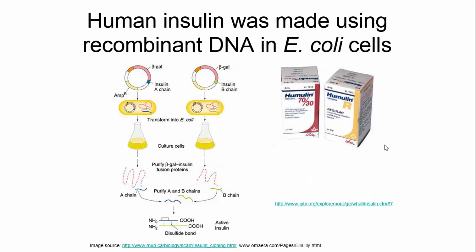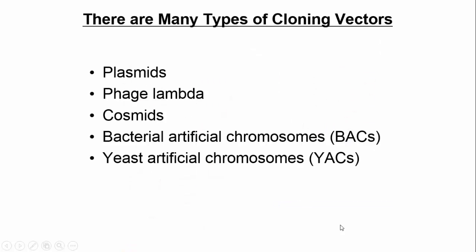This exact process is used to produce human insulin for diabetics — a great revolution in technology that has helped many people live normal lives. There are also other types of cloning vectors beyond plasmids, such as phage lambda, cosmids, BACs, and YACs. However, plasmids are by far the most common, so that's the main focus here.